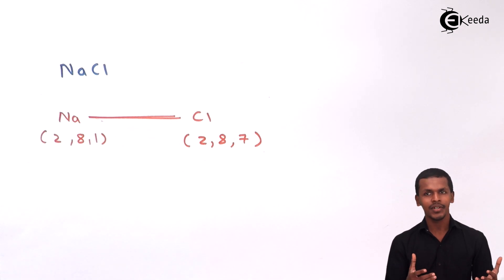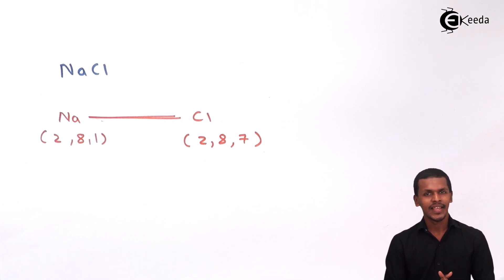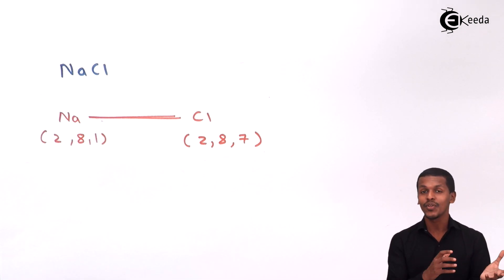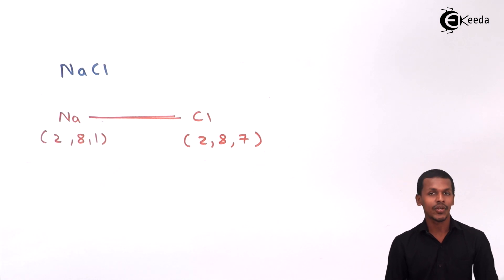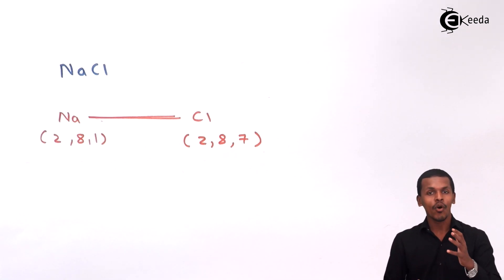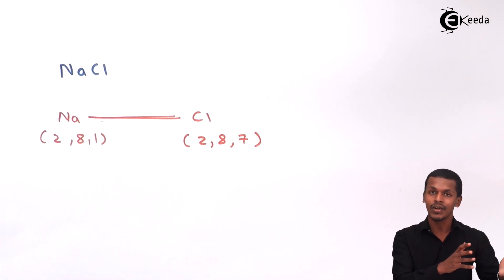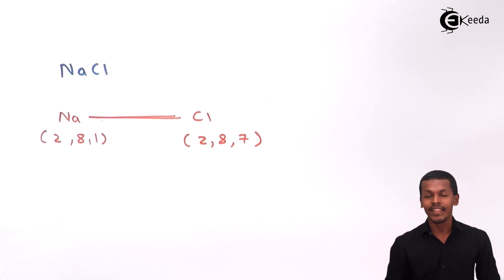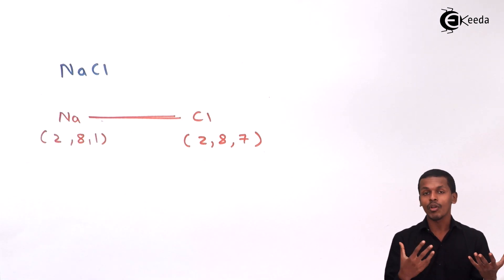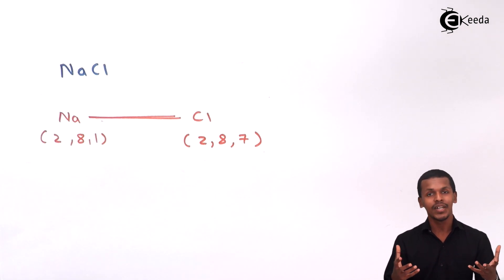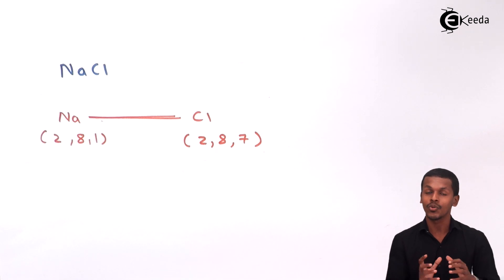Consider carbon dioxide: carbon forms a double bond with one oxygen and another double bond with another oxygen. In this case, the valency of carbon is four, while that of oxygen is two. The second significance of the octet rule is it gives an idea of which kind of atom a particular atom can form a bond with, depending on the valence electrons. It tells us not only about valency but also about the nature of bond formation between atoms.